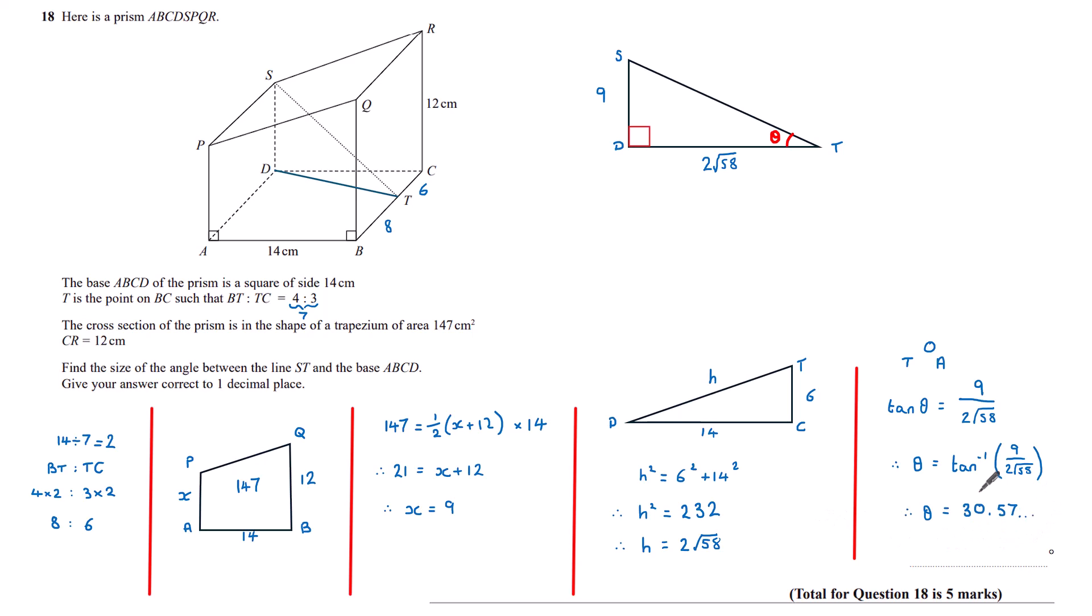So theta is tan to the minus 1 of 9 over 2 root 58. Evaluating that on my calculator, I get theta to be 30.57 and so on, but my answer needs to be correct to one decimal place. Since we have a 7 to the right of this 5, it will round up to give me a final answer of 30.7 degrees.